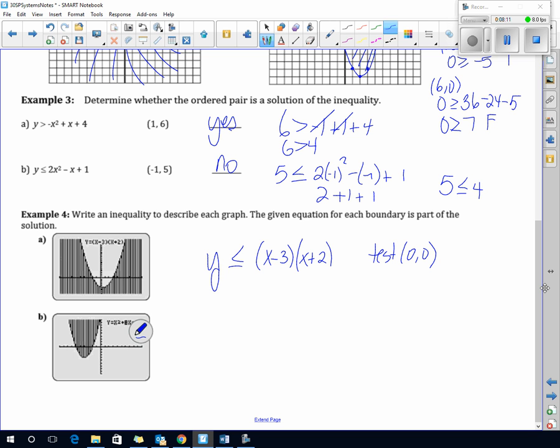So, if I substitute 0 in for Y and X, I get 0 is less than or equal to, 0 goes in there, what do I get in this bracket? Minus 3. What do I get in this bracket? Plus 2, negative 3 times positive 2 is negative 6. And this is, in fact, false. And if you want to be really sure, you can test something that's shaded, but we will go on from there.